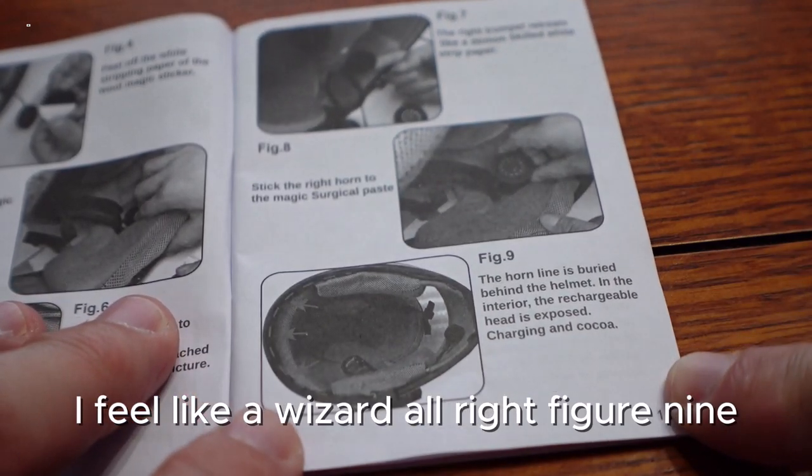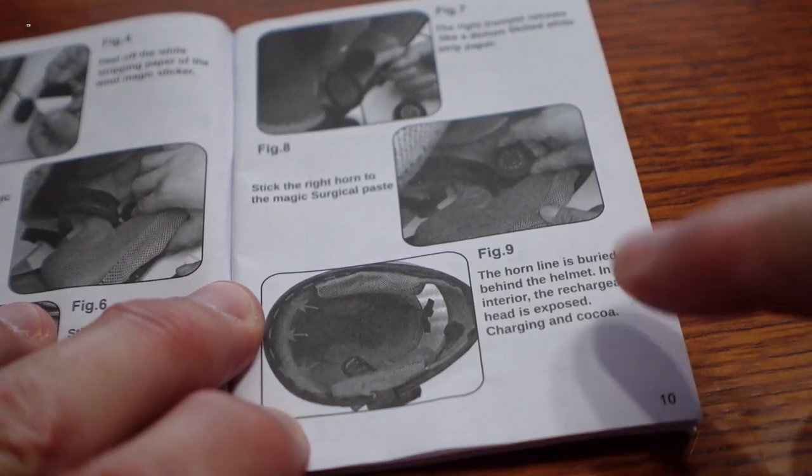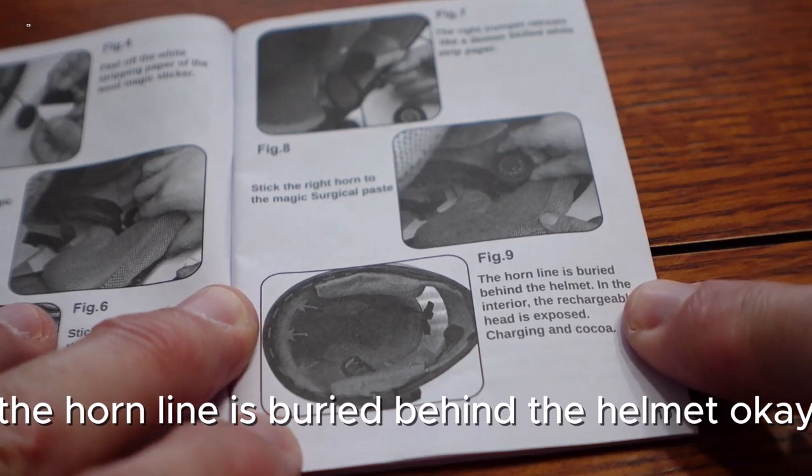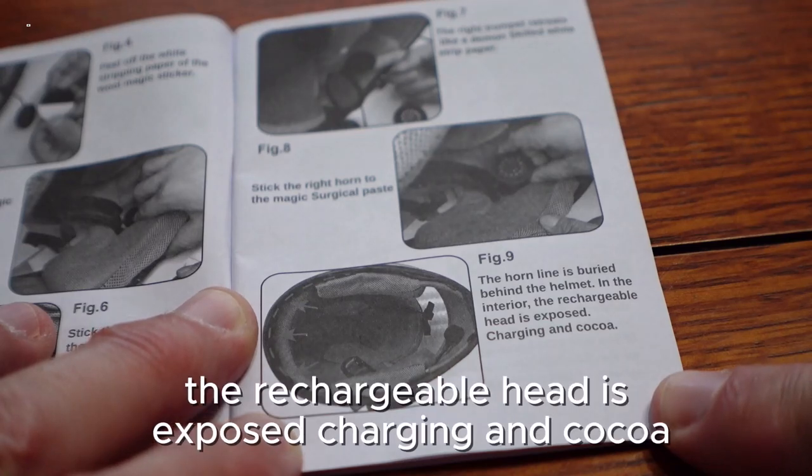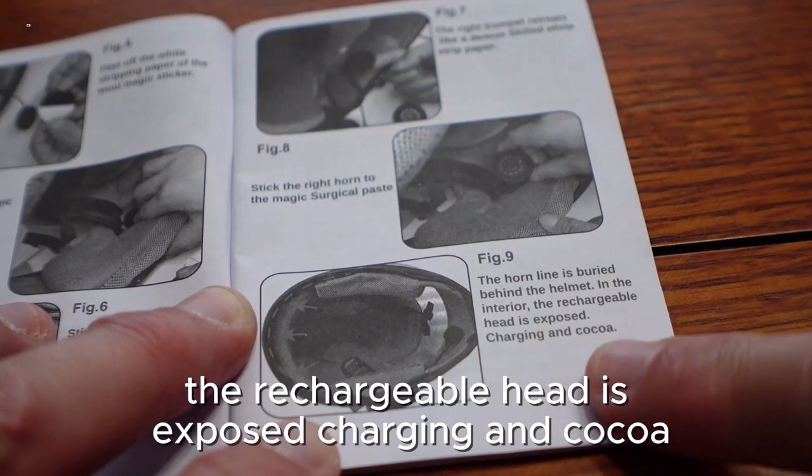All right, figure nine: the horn line is buried behind the helmet. Okay, well that makes sense, in the interior. The rechargeable head is exposed for charging and cocoa.